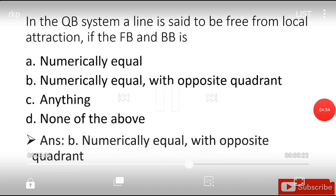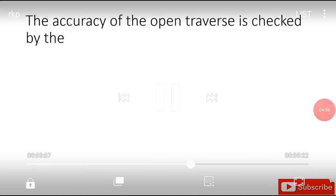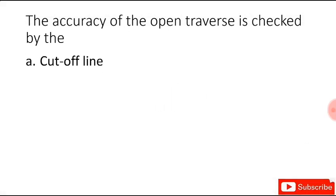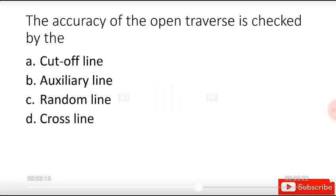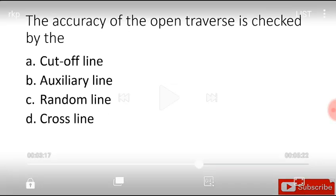The accuracy of the open traverse is checked by cut-off line, auxiliary line, random line, or cross line, and the answer is cut-off line.